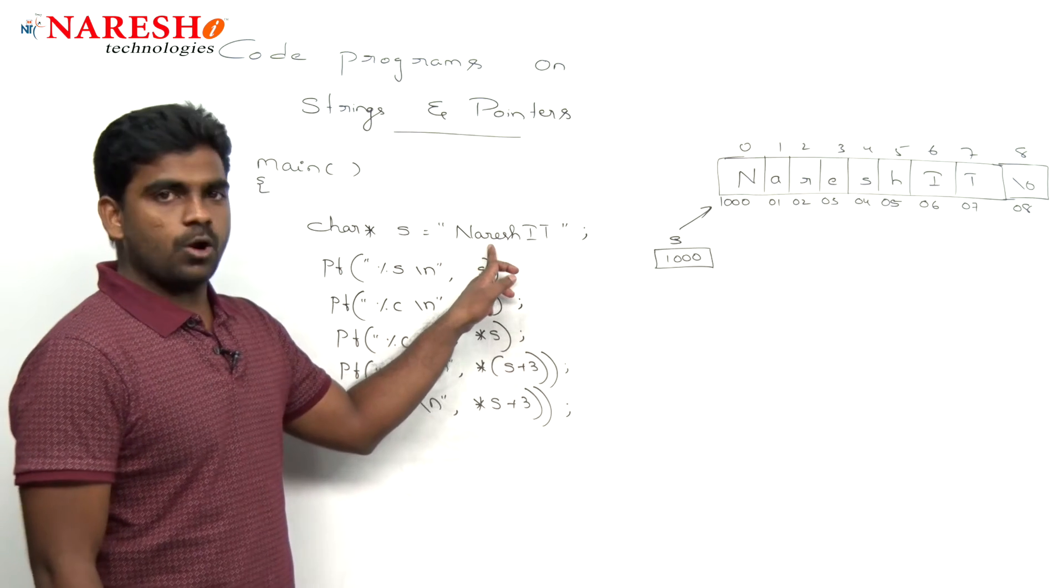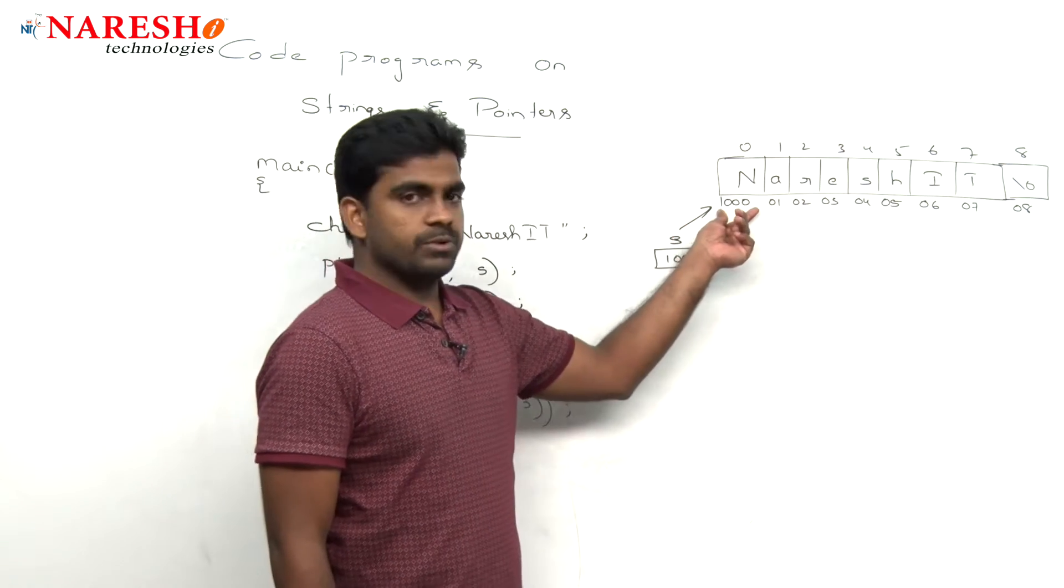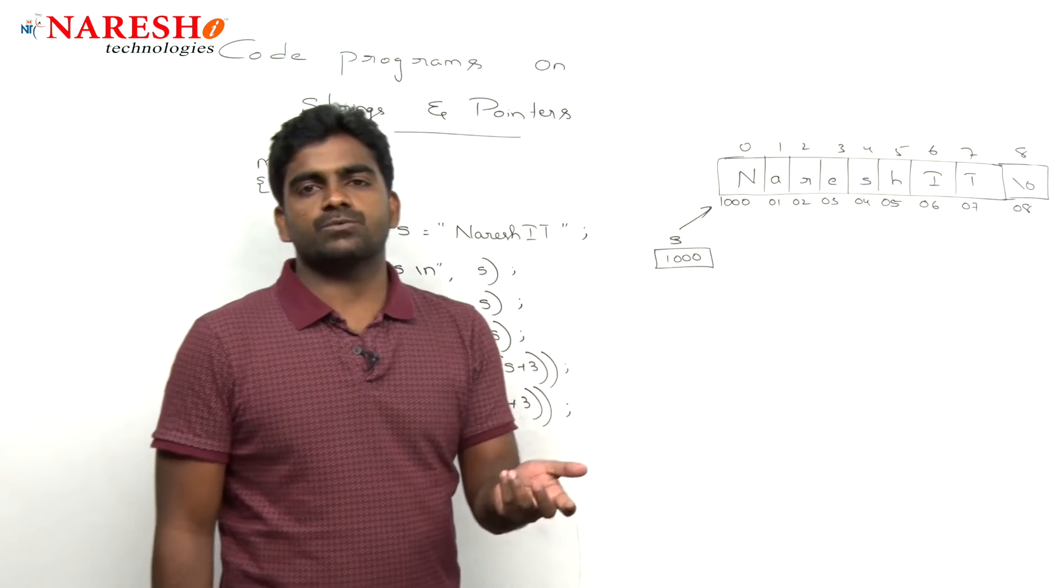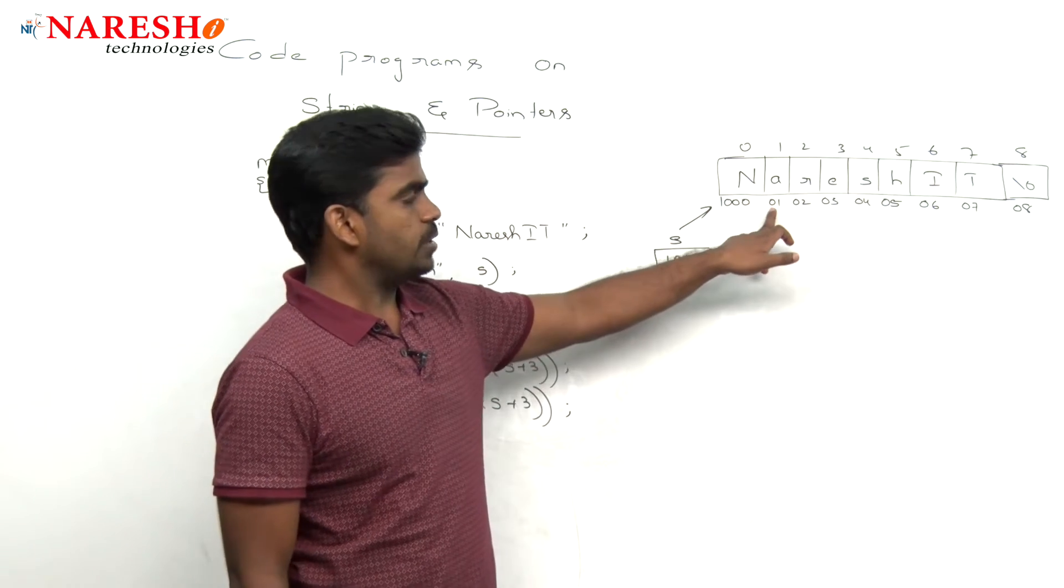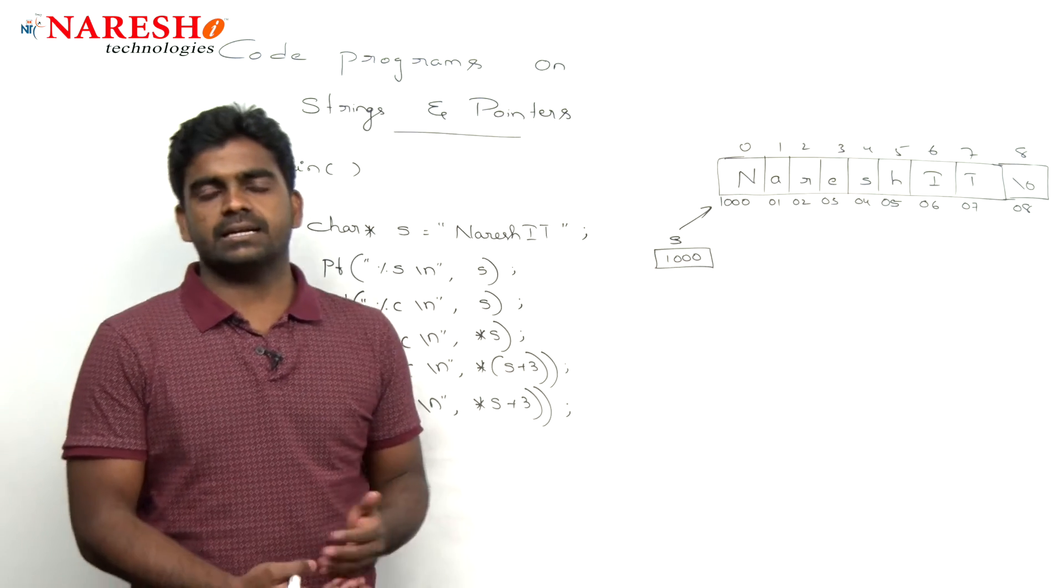So this is the string and how memory will be allocated. That base address will be collected by that variable and every character occupies one byte memory. So the next location is one thousand and one, one thousand and two, and so on up to the null character. Last character is a null character.